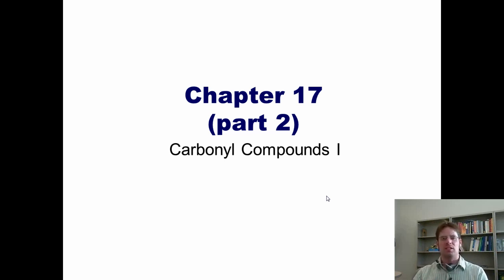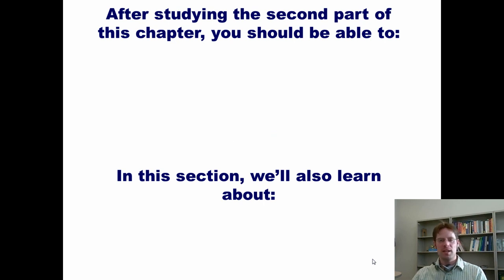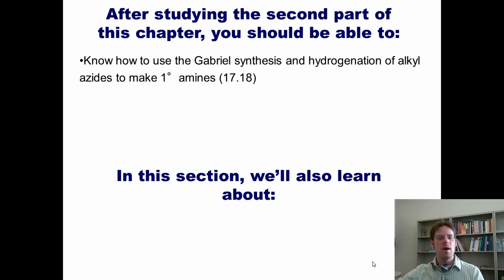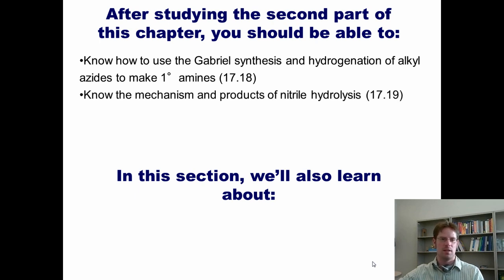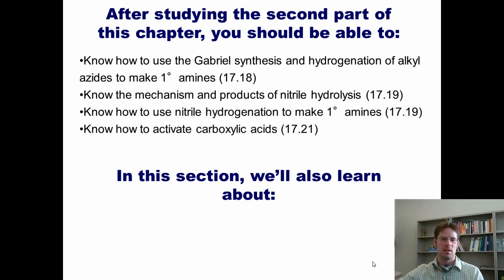Welcome students to our third lecture of Chapter 17, which I've divided into two separate PowerPoint presentations. During this one, we're going to talk a little bit more about amine substitution reactions. After studying the second part of this chapter, you should be able to know how to use the Gabriel synthesis and hydrogenation of alkyl azides to make primary amines, know the mechanism and products of nitrile hydrolysis, know how to use nitrile hydrogenation to make primary amines, know how to activate carboxylic acids, and apply all of this knowledge to total synthesis.